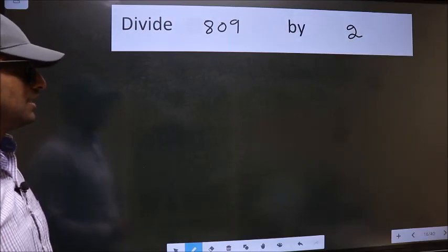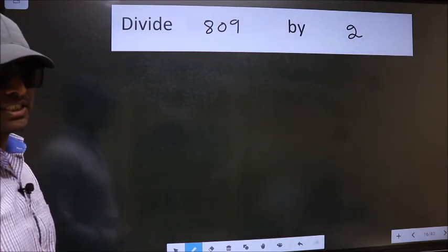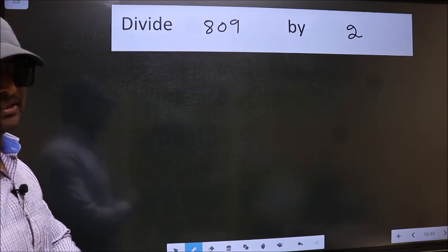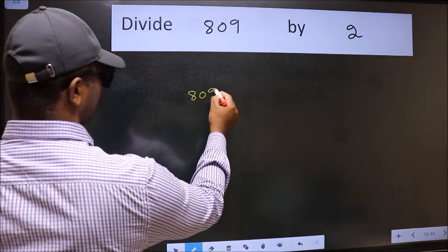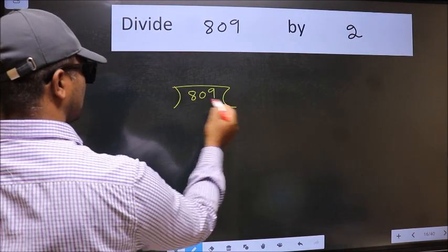Divide 809 by 2. To do this division, we should frame it in this way. 809 and 2 here.